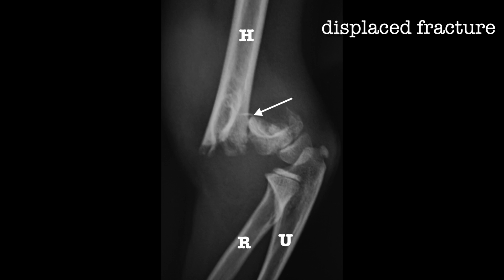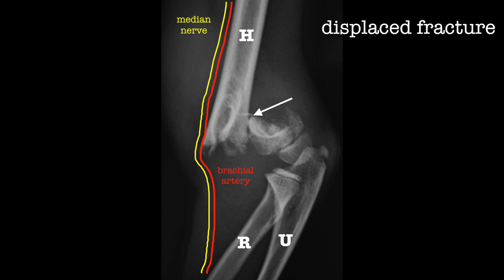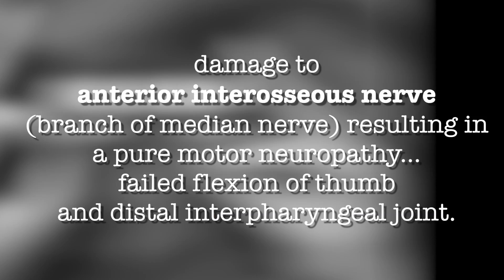When looking at the x-ray, in most cases you'll find posterior displacement and tilt. This is important to note as it can result in neurovascular complications, as the proximal fracture segment can poke the soft tissue causing injury to the brachial artery and median nerve. Damage to the anterior interosseous nerve is detected by the inability to do the OK sign.